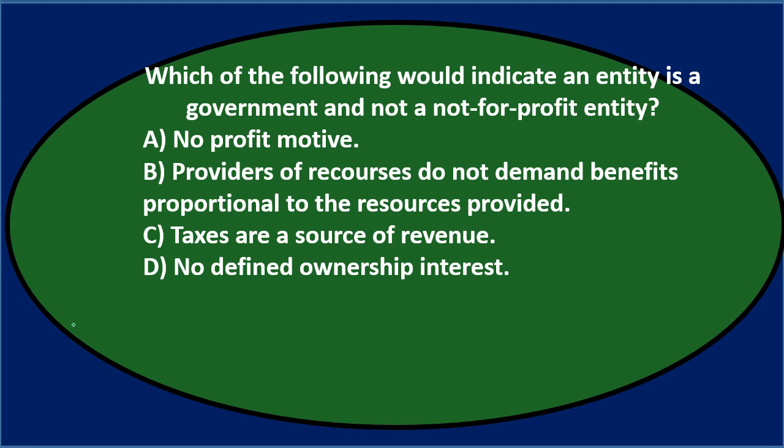Option A, no profit motive, would apply to both not-for-profit organizations and governments, so it doesn't distinguish between the two. Option B, providers of resources not demanding proportional benefits, also applies to both — a not-for-profit can receive donations where there's no fair market exchange. So option B doesn't distinguish them either.